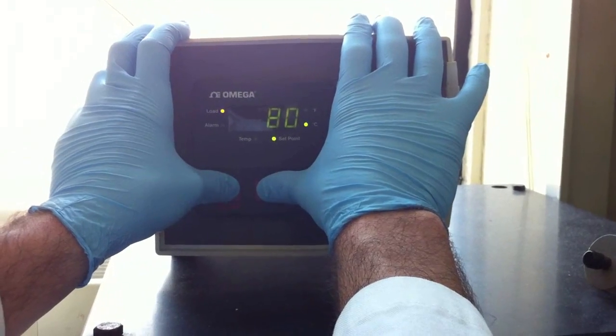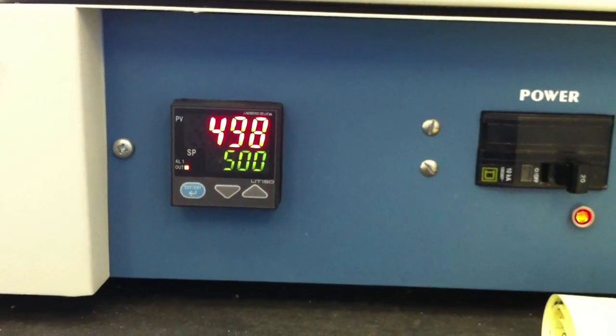The electrode is again heated to 80 degrees Celsius, followed by a treatment at 500 degrees Celsius.